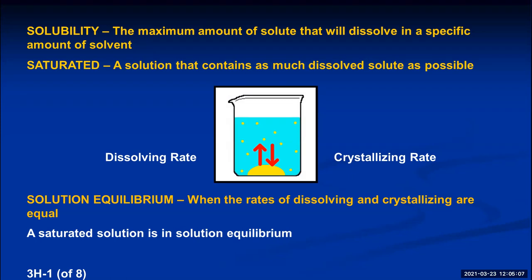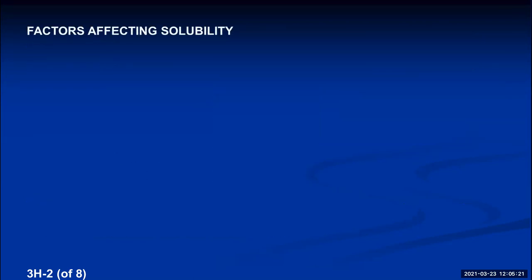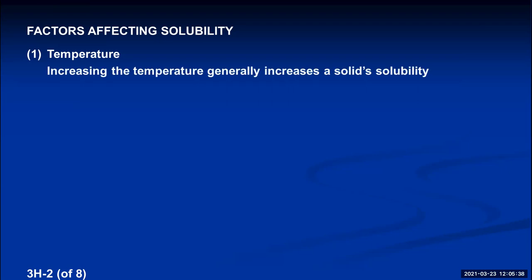What if you wanted to dissolve more sugar into the tea? We know that if you warm up the tea and make it hot instead of iced, you can dissolve a whole lot more sugar. Temperature is the most important factor affecting solubility. Almost always, if you increase the temperature, you increase the rate of dissolving so much that by the time you reach equilibrium, you have a large amount of solute in the dissolved state. So increasing temperature almost always increases a solid's solubility. There are some strange exceptions — like ytterbium-3 sulfate dissolves better in cold water than hot — but for most solids, raising temperature increases solubility.